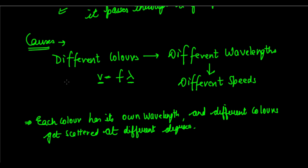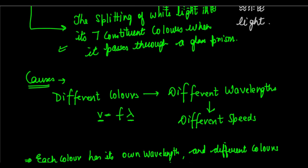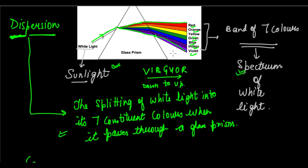Because of this varying degree of bending of the different colors, they separate from each other. When they separate, you see independent colors of light forming a band. Looking at the diagram, red is at the top and violet is at the bottom, and we can infer something from this about their respective wavelengths.